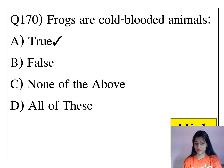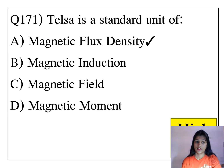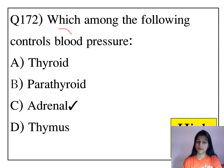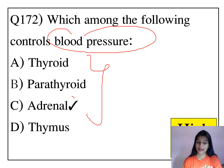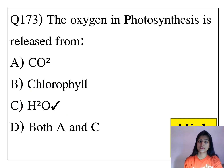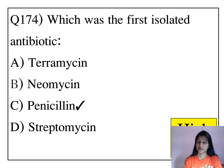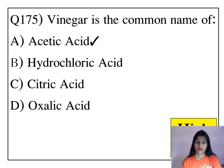Frogs are cold-blooded animals. Tesla is a standard unit of magnetic flux density. Which among the following controls blood pressure? Adrenaline controls the blood pressure. The oxygen in photosynthesis is released from water, that is H₂O. Which was the first isolated antibiotic? The answer is penicillin. Vinegar is the common name of acetic acid.